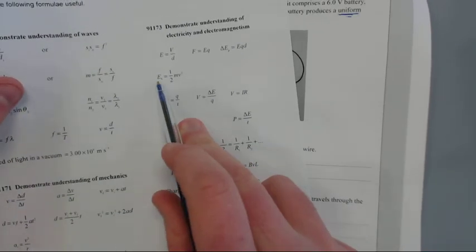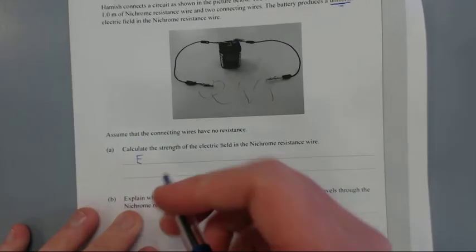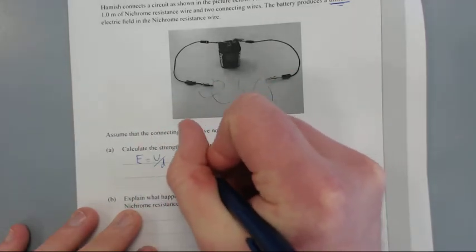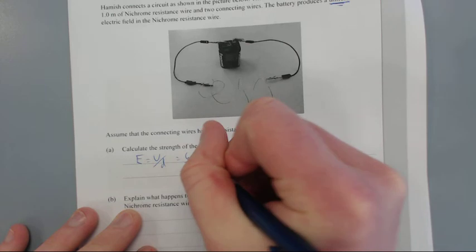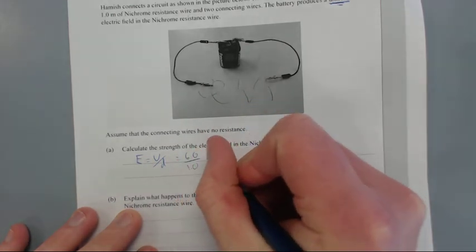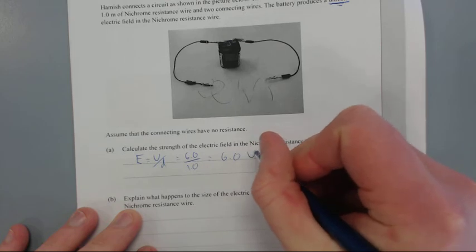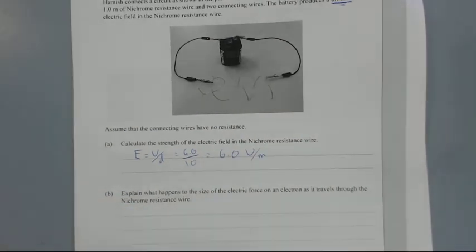So E is equal to voltage over distance, which is just 6 volts in the wire divided by 1 meter equals 6.0 volts per meter.